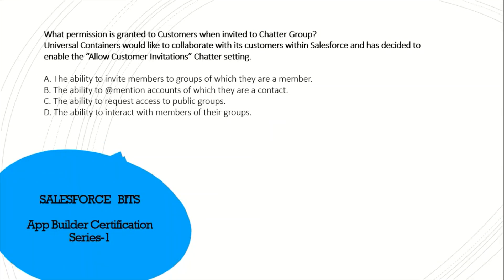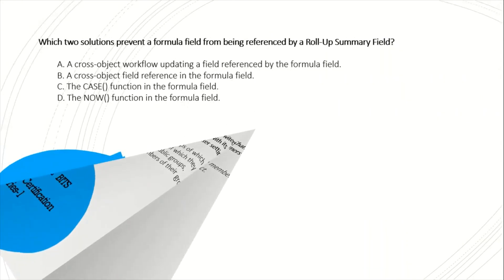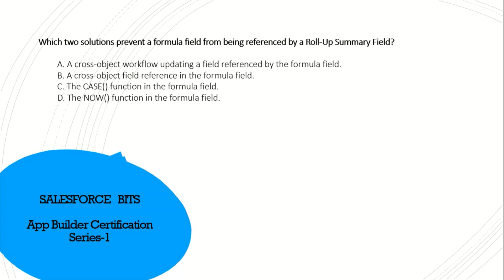What permission is granted to customers when invited to a Chatter group? Universal Container wants to collaborate with customers within Salesforce and has enabled customer invitations in Chatter settings. The options: ability to invite members to groups they are part of — yes, possible. Ability to at-mention accounts — I don't think so. Ability to request access to public groups — no, access is granted by admin. Ability to interact with other group members — yes, that's the whole purpose. The correct answer is A and D.